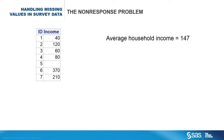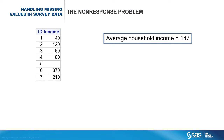Before I introduce the new procedure, let's take a look at the non-response problem. Suppose you want to estimate the average income in a neighborhood. Assume that there are 70 households in that neighborhood and you select a sample of 7 households out of 70 by using a simple random sample without replacement. You mailed a questionnaire to all selected households, but only 6 households responded to your survey. Household 5 did not return the questionnaire. If you take the average of the 6 respondent households, then you will estimate the average income in that neighborhood as 147.